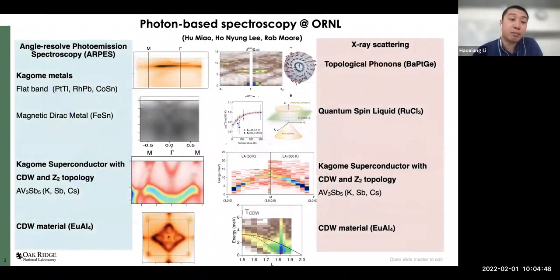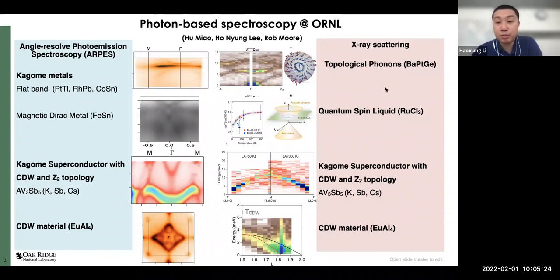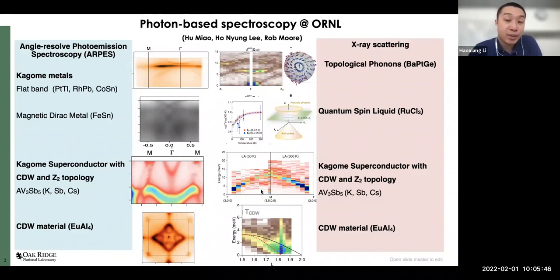The subjects we focus on are mostly Kagome metals, which are a highly hot topic in the condensed matter physics field. Kagome metals contain non-trivial electronic structures such as topological band structures, Dirac cones, and flat band dispersions that generate strong electronic correlations. They also exhibit many intertwined electronic instabilities and symmetry breaking orders such as superconductivity, CDW, and others. We also work on quantum spin liquid, which is a special focus here at ORNL across groups and divisions. Additionally, we look at topological phonons. Anyone interested in these subjects is welcome to discuss or reach out for collaborations.